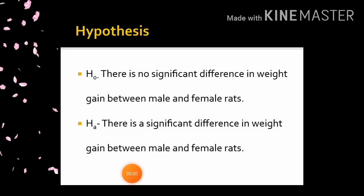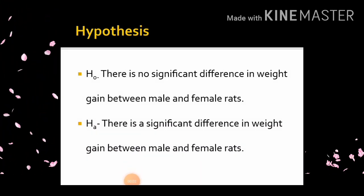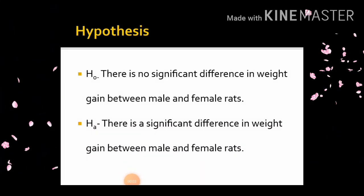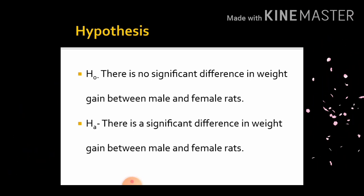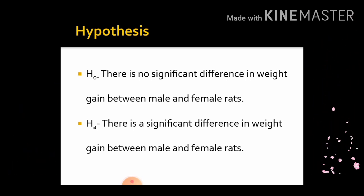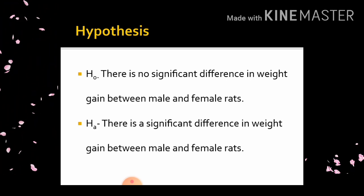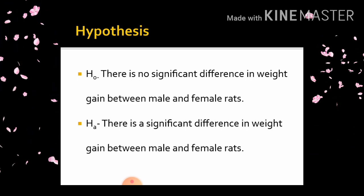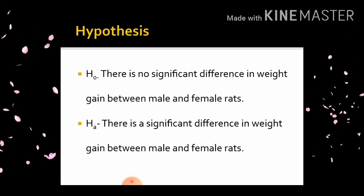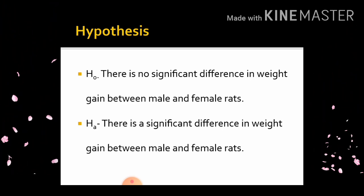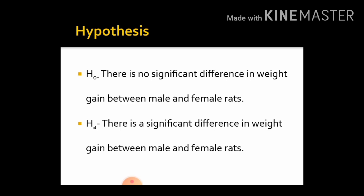Let us state the hypotheses. Null hypothesis: there is no significant difference in weight gain between male and female rats — that is, the difference is equal to 0. Alternative hypothesis: there is a significant difference in weight gain between male and female rats — that is, the difference is not equal to 0.